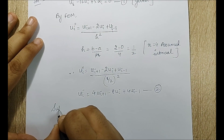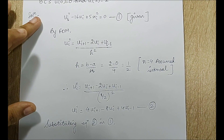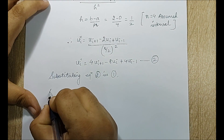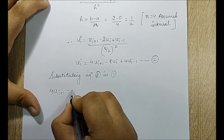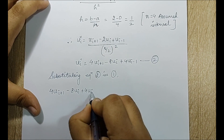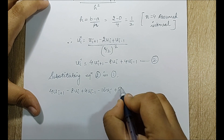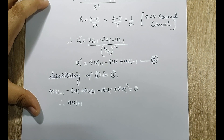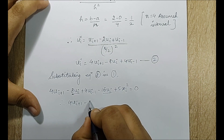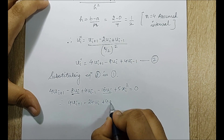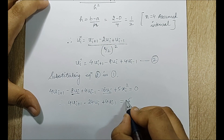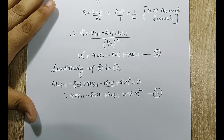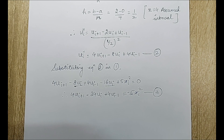Substituting equation 2 into equation 1: (4u_{i+1} − 8u_i + 4u_{i−1}) − 16u_i + 5x_i² = 0. Combining the u_i terms gives 4u_{i+1} − 24u_i + 4u_{i−1} = −5x_i². I mark this as equation 3, with the x_i² term moved to the right-hand side.